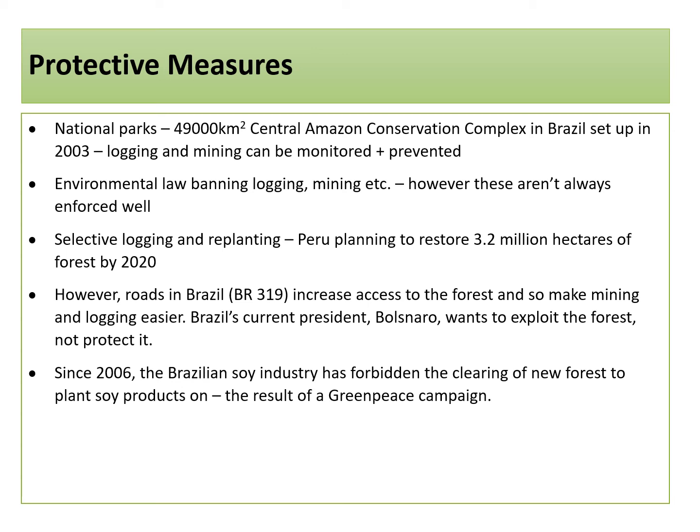However, in other parts of the Amazon, such as Brazil, more roads are being built — including the BR319 — which increase access to the forest and so make mining and logging easier. Brazil's current president, Bolsonaro, wants to exploit the forest rather than protecting it. Since 2006, the Brazilian soy industry has forbidden the clearing of new forests to plant soy products on, as a result of a Greenpeace campaign.